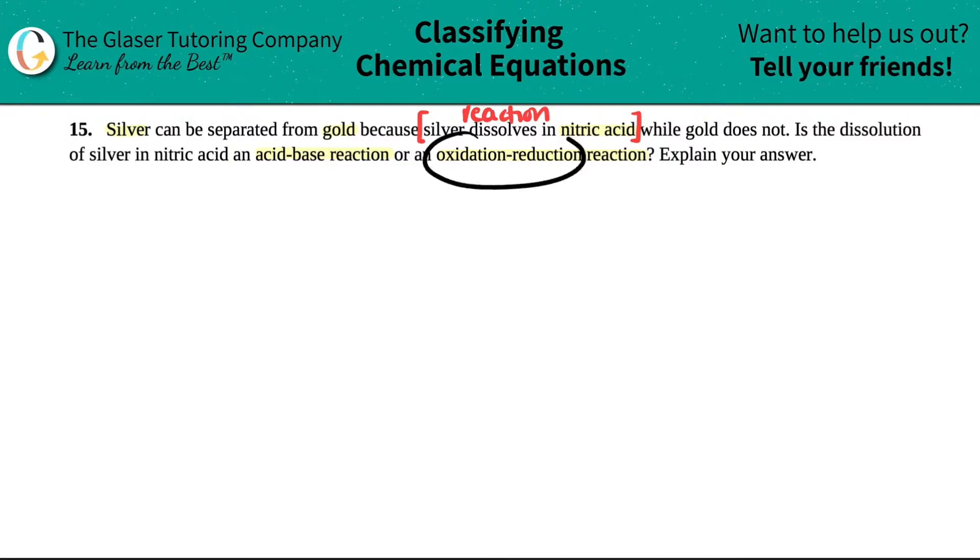An oxidation reaction is happening because there is a change in state. Actually, nope, hold that thought. It's a change in oxidation kind of states, but it's change in oxidation states. So when we're talking about oxidation reduction reactions, we're usually talking about oxidation states, not the general states of solid, liquid, and gas. We're talking about oxidation states, which are charges.